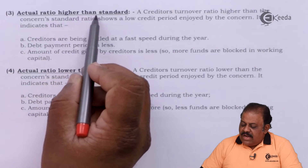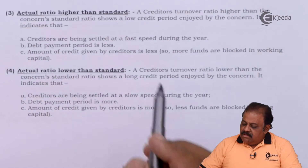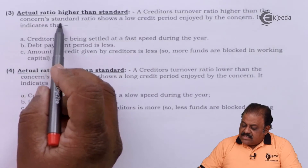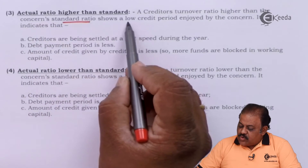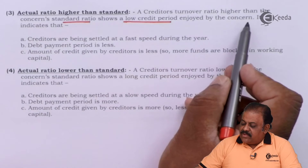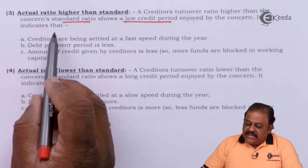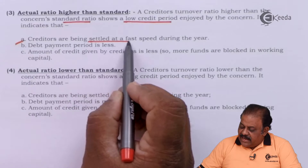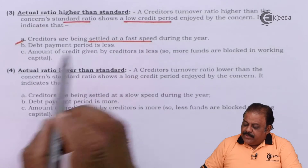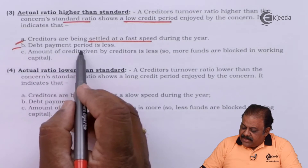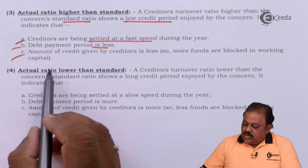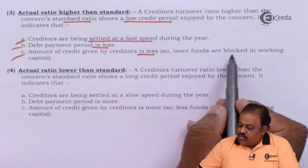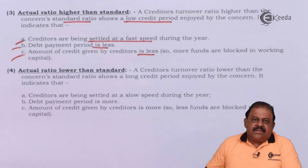A creditors turnover ratio higher than the concern's standard ratio shows a low credit period enjoyed by the concern. It indicates that creditors are being settled at a fast speed during the year. The debt payment period is less, and the amount of credit given by creditors is less, so more funds are blocked in working capital.